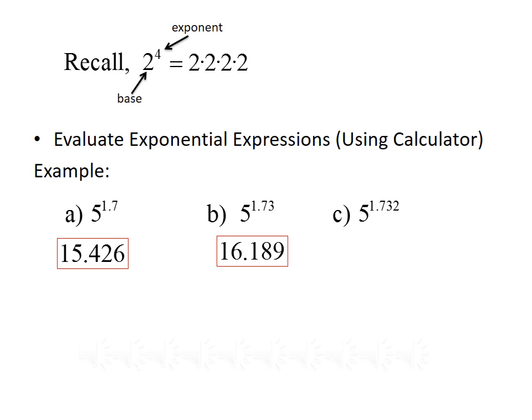If we evaluate 5 to the 1.73, we get 16.189, and 5 raised to the 1.732 gives us 16.241.